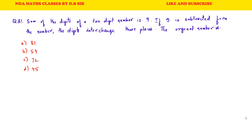Question 31: The sum of digits of a two-digit number is 9. If 9 is subtracted from the number, the digits interchange their places. Find the original number. Using options: all options have digit sums of 9. Testing 54: 54 − 9 = 45, and indeed the digits interchange (5 and 4 swap places). So 54 is the correct answer. B is the correct answer.